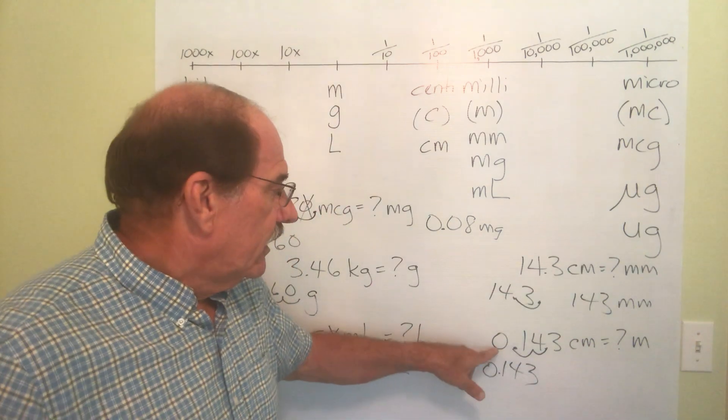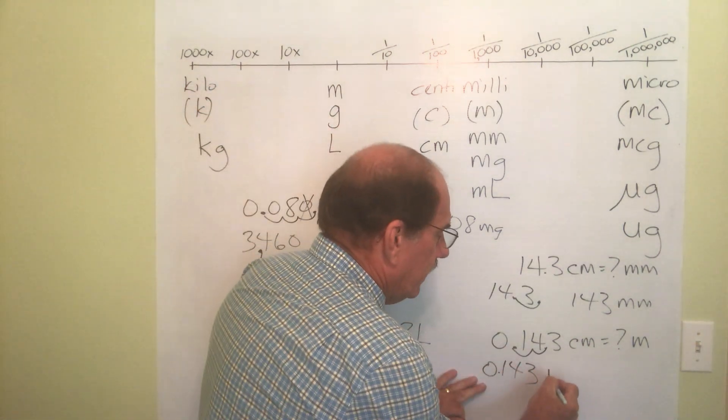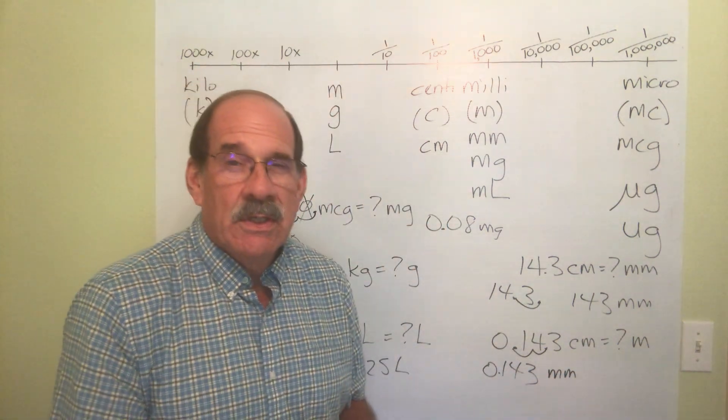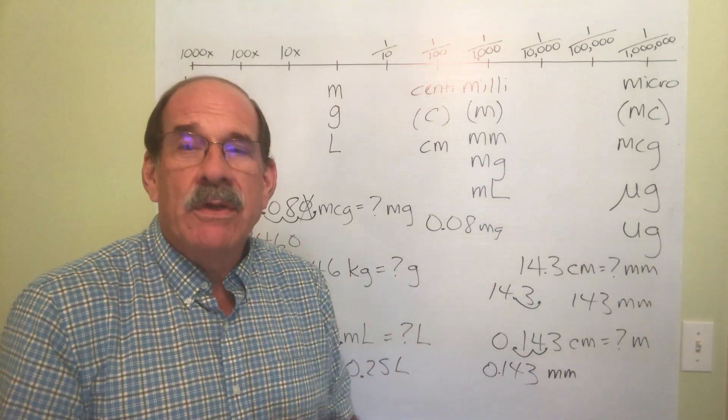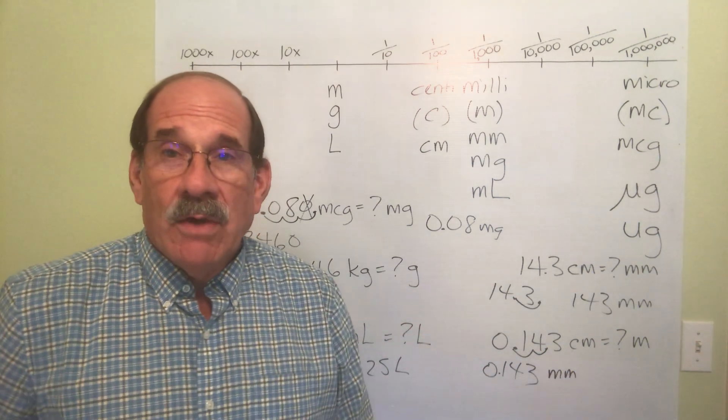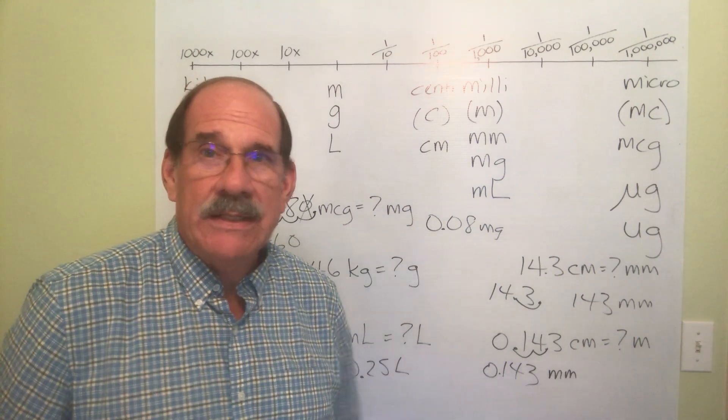Because exactly 14.3 centimeters is exactly 0.143 millimeters. So here's an exception to the rounding off rule I mentioned before. If you're merely moving decimals left or right, don't round off to that two decimal places, that hundredth thing. Leave it the way it is.